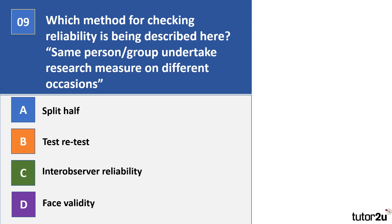All right, which method for checking reliability is being described here? Same person or group undertake research method measure on different occasions. So A, B, C, or D, and pause your video. Okay, now your correct answer there is B, test-retest.